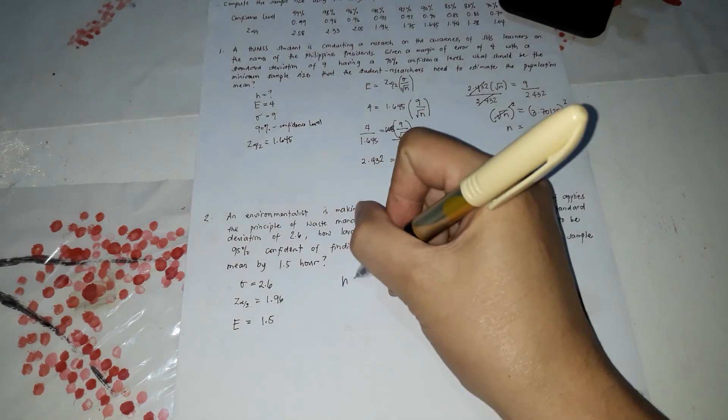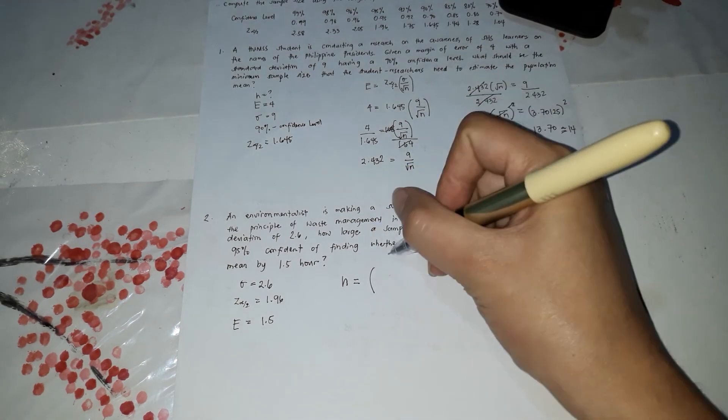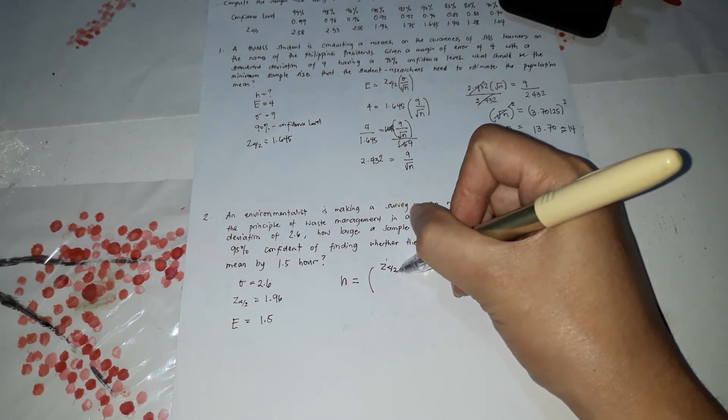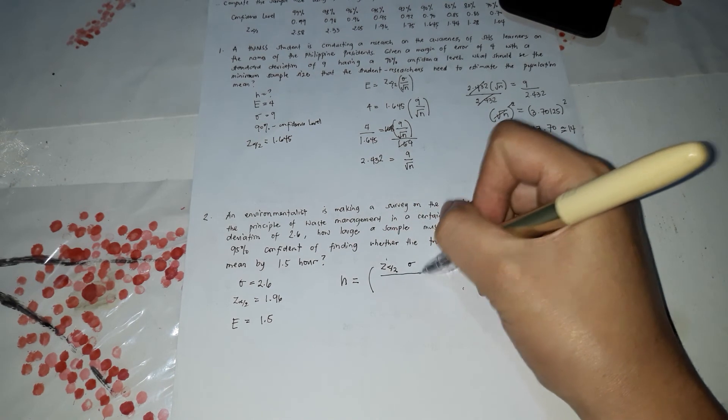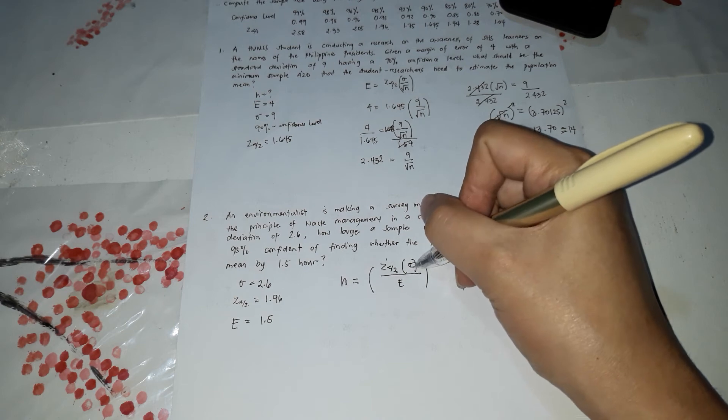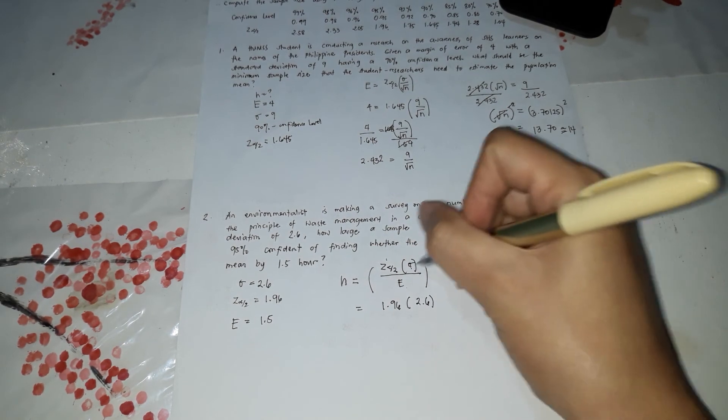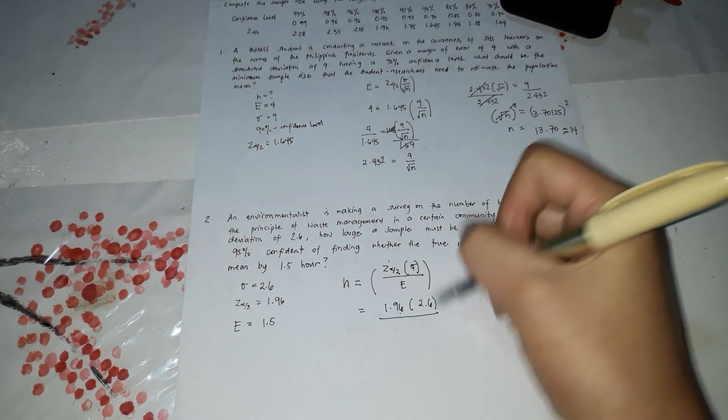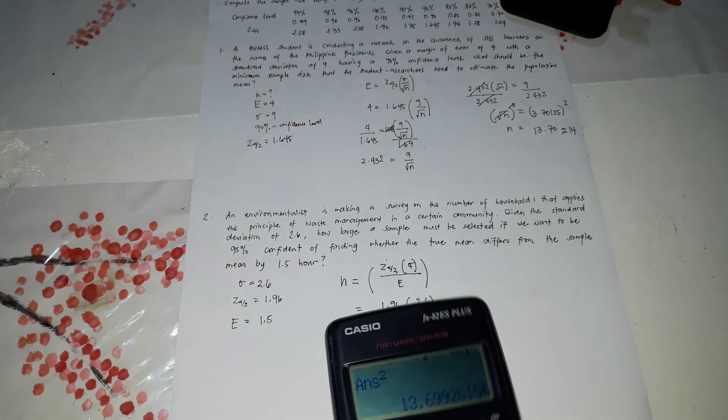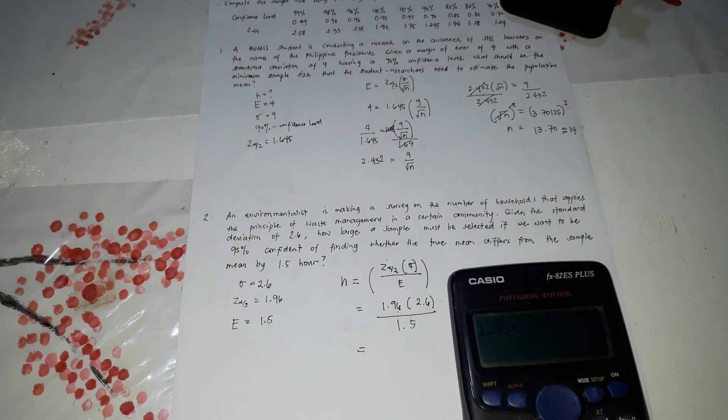So now we're going to use the formula. The formula for N, I'll use this one so that you would not find it very difficult to memorize again the formula. The Z multiplied by the standard deviation divided by E. So 1.96 times 2.6, standard deviation is 2.6. The Z is 1.96 divided by 1.5.